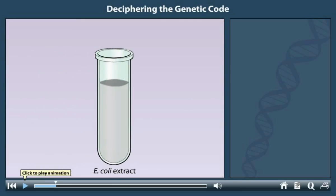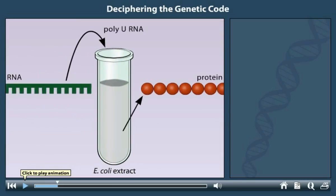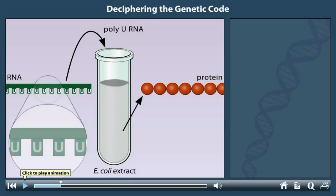When the investigators added RNA to the tube, the extract produced protein. Nirenberg and Matthaei experimented with a number of different sources of RNA and even used a synthetic RNA that contained nucleotides with only the base uracil called poly-U. The scientists found that the extract produced protein, and the protein consisted entirely of phenylalanine amino acids.